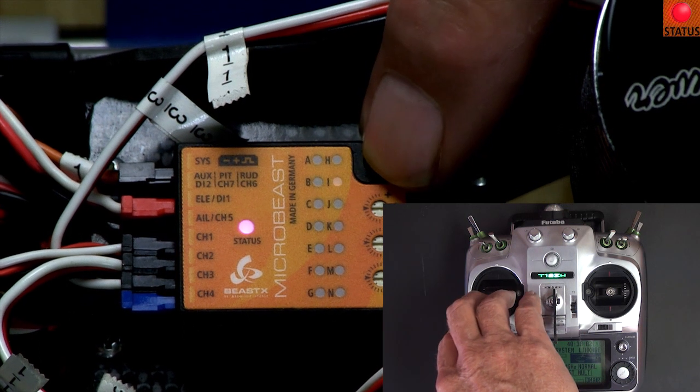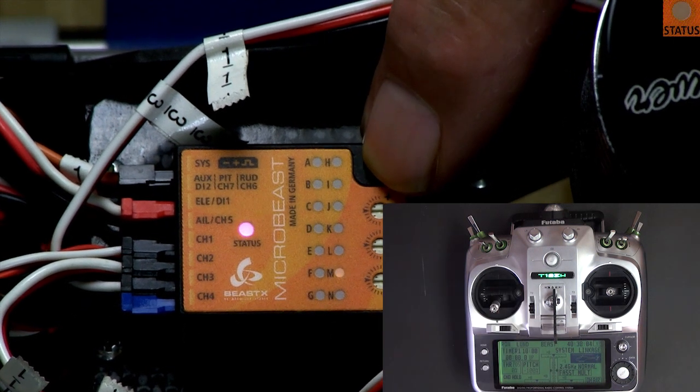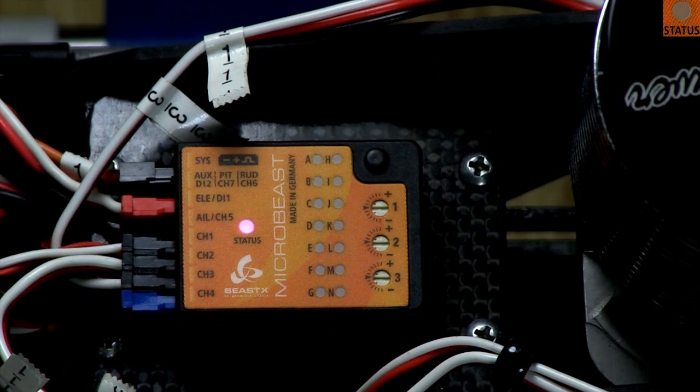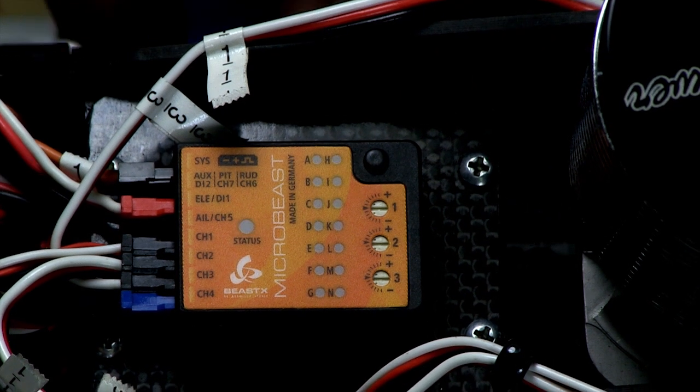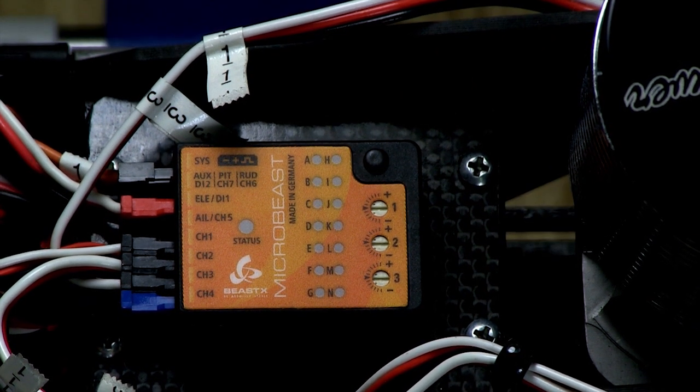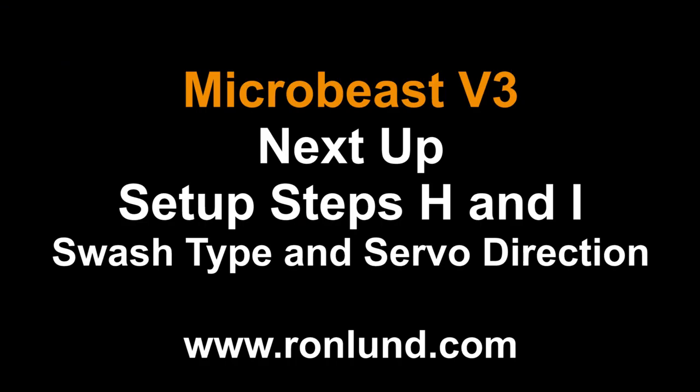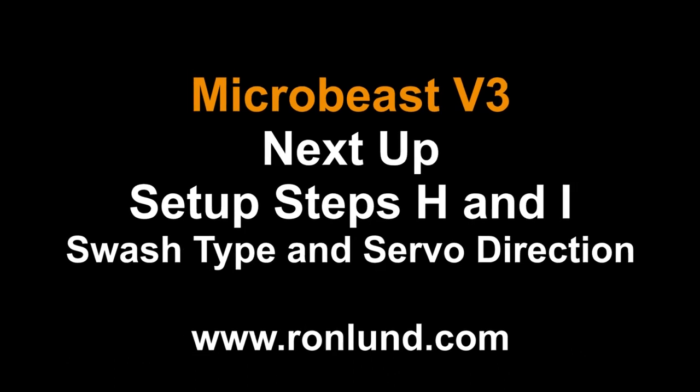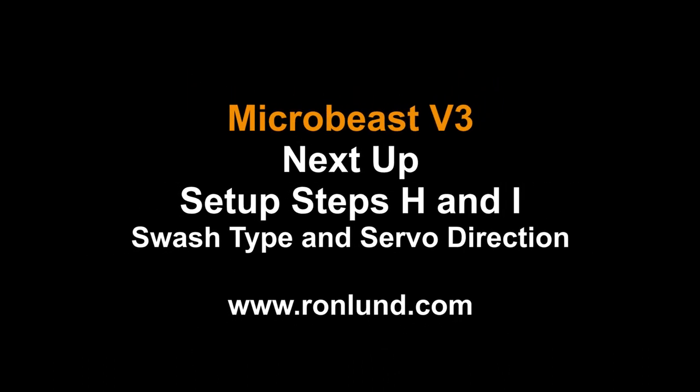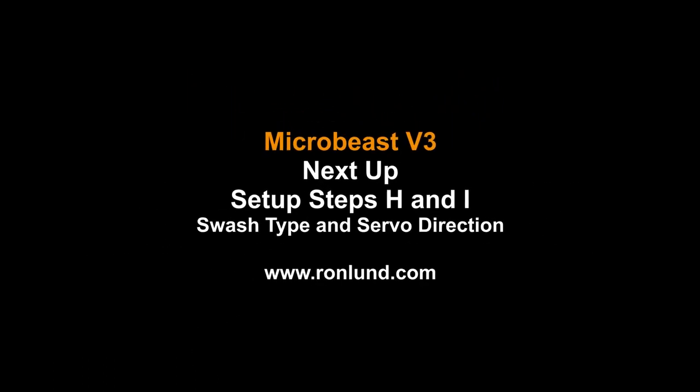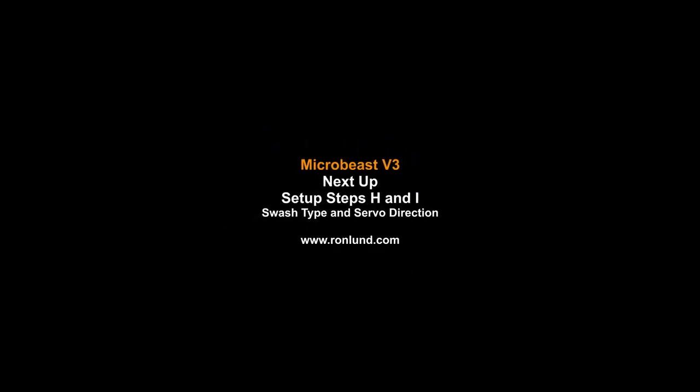Now I move the rudder stick so the status light turns off. This ensures that all your work is saved. Step out of the setup menu and power down. In the next video, we'll cover Steps H and I: setting your swash plate type and getting your servos going in the right direction. Up until now that hasn't mattered. So please subscribe—I would appreciate it.